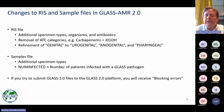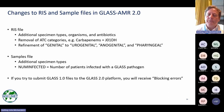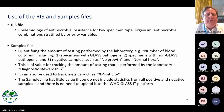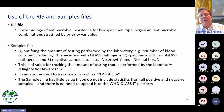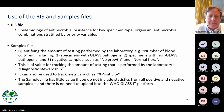If you try to submit GLASS 1.0 files to the GLASS 2.0 platform, you will receive blocking errors that prevent submission, as well as non-blocking errors which are more like warnings. There are two files: the RIS file — the antibiotic resistance file for looking at the epidemiology of resistance, stratified by gender, age group, and inpatient/outpatient infection origin. That's the RIS file and I hope all of you submit that.